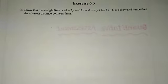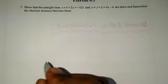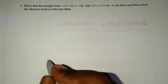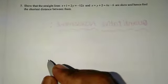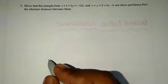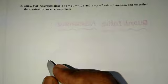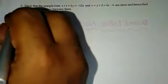Hi students, now we are going to exercise 6.5, question number 5. Show that the straight lines x plus 1 equal to 2y equal to minus 12z, and x equal to y plus 2 equal to 6z minus 6, are skew lines and hence find the shortest distance between them.